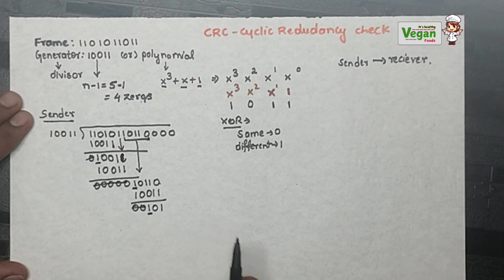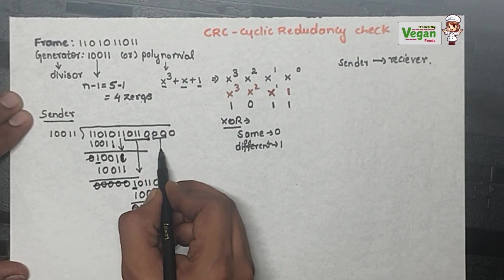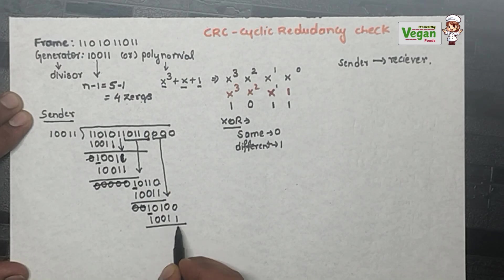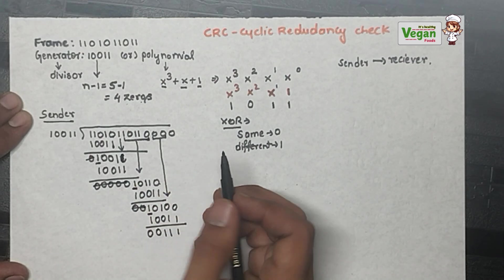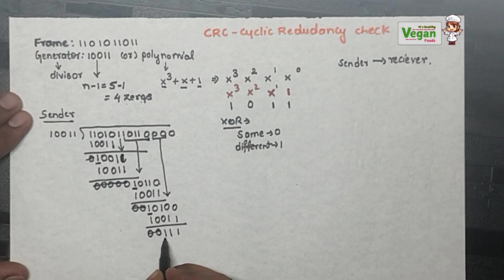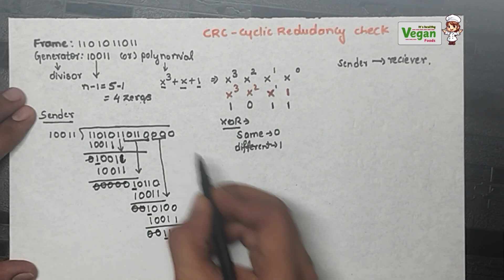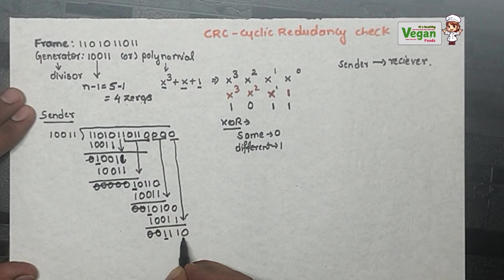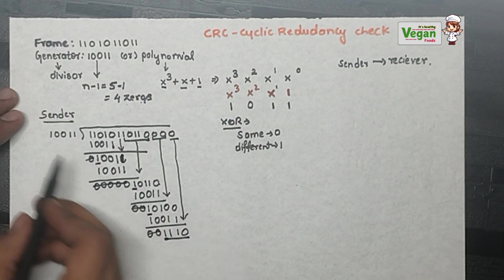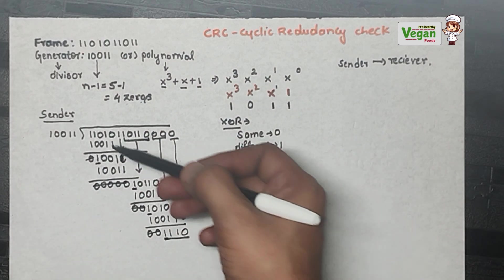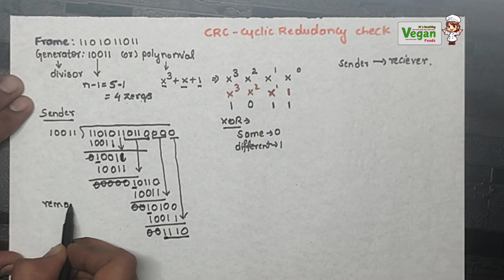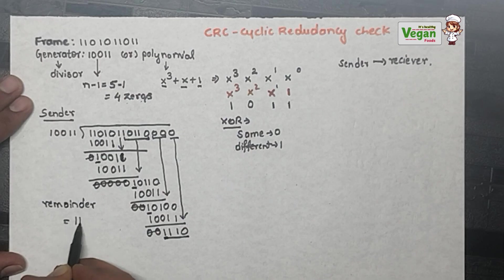When two leading zeros are present, I bring down 2 bits. Dividing again with 10011: different=1, different=1, different=1, different=1, same=0, same=0. Now, since we have only 4 bits remaining and the divisor is 5 bits, 4 bits cannot be divided by a 5-bit number. So we stop the process here. The remainder is 1110.